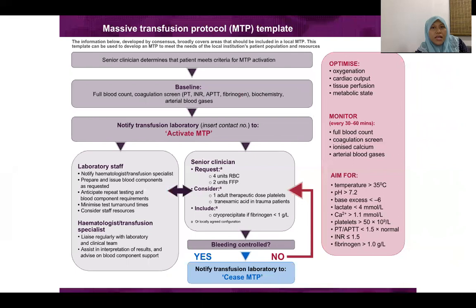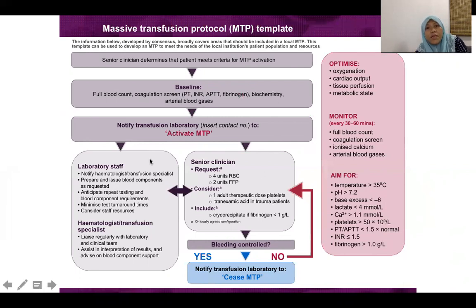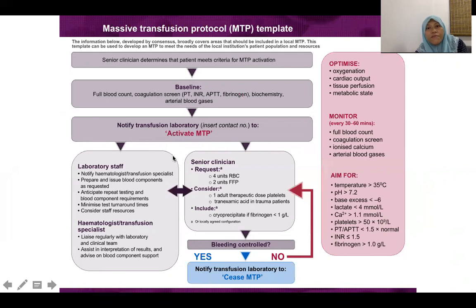It is important to understand massive transfusion because it leads to changes in blood composition — electrolytes, volume, and potentially bacteria or toxins — which can cause massive transfusion adverse events including infection. The MTP protocol flowchart is in place in trauma and emergency departments and is designed to help manage blood loss in these patients.